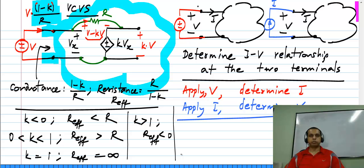Sometimes you will need to change the values of resistors for various reasons and these techniques are used. In summary, the utility of control sources is that they are used for modeling and abstraction of complicated circuits into simple models, as well as for synthesis of exotic functions.